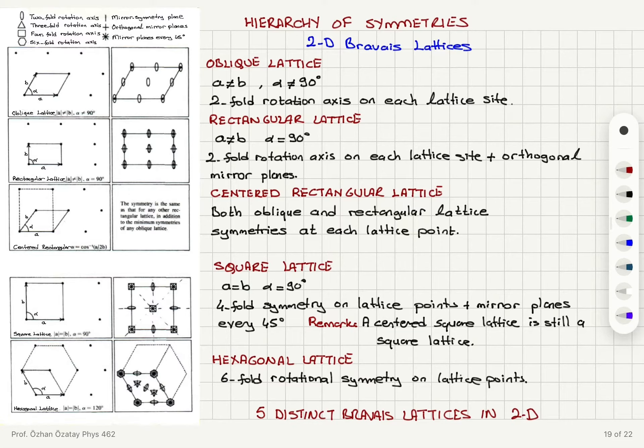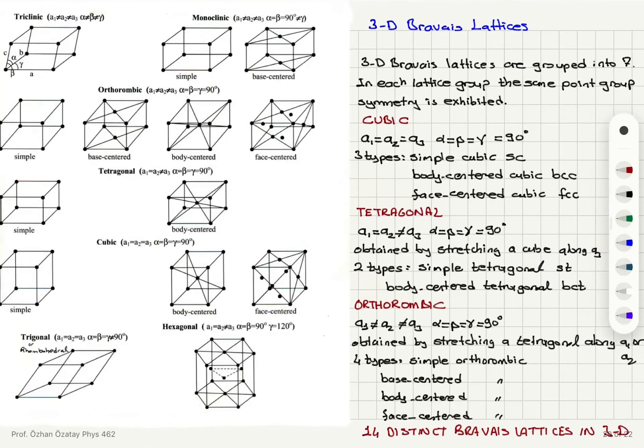Now what is the corresponding scenario in three dimensions? Three-dimensional Bravais lattices are grouped into seven, and in each lattice group the same point group symmetry is exhibited. So we have the same set of rotation, inversion, and mirror symmetry properties.